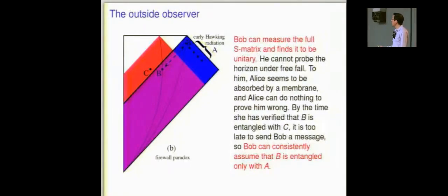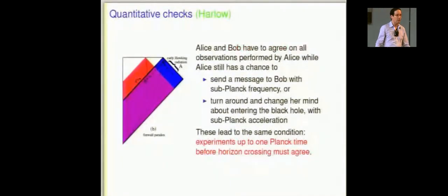Now, Bob has a different story. He can measure the full S matrix. He can't probe the horizon under free fall. He has no reason to insist that B should be entangled with C. And so he can consistently say that there's no contradiction. He measures the S matrix. It's unitary. B is entangled with A. Everything's fine. Each person sees one entanglement and not the other.